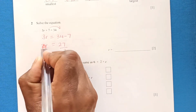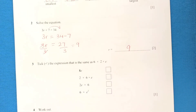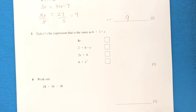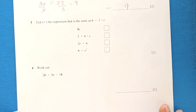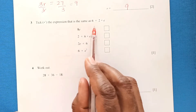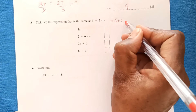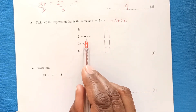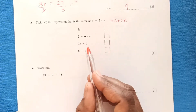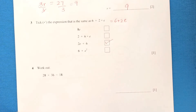To remove the 3 we divide both sides by 3. Since 3 times 9 is 27, the value of r is 9. For question three, we need to identify the correct simplified expression. The correct answer is 6 + 2e, which is the same as 2e + 6.